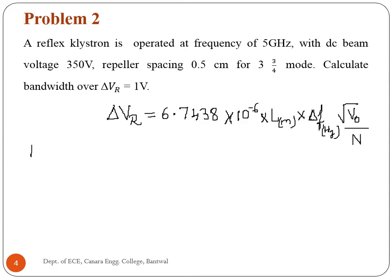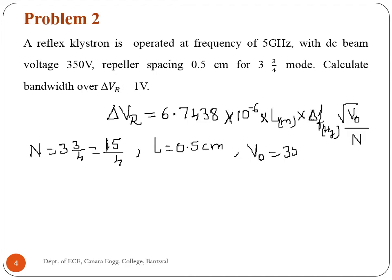N is given as 3 and 3/4 which is equal to 15/4. Remember the repeller space should be in meters — here it is given in centimeters. Beam voltage V0 is equal to 350 volts, and repeller space is 0.5 × 10⁻² meters.